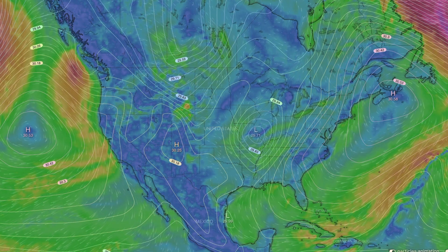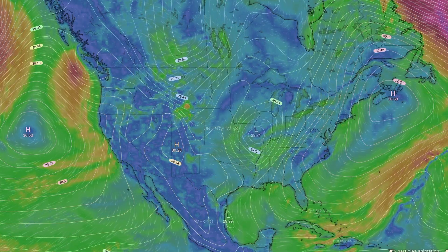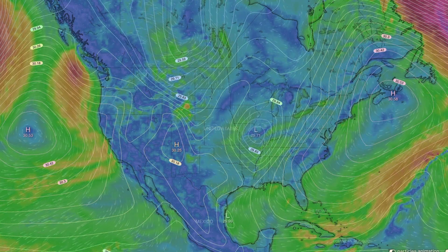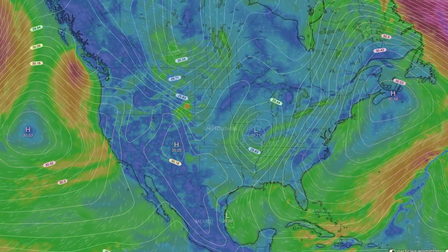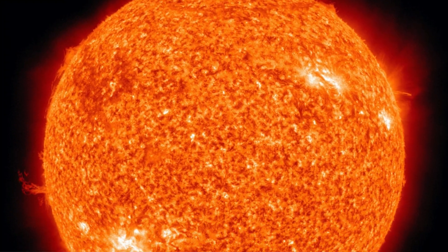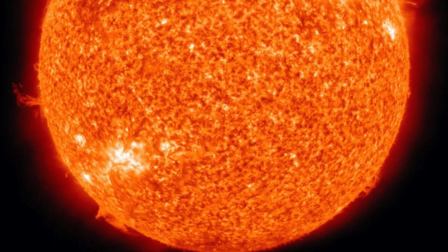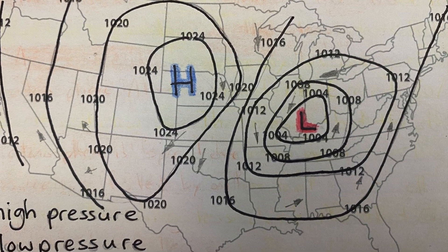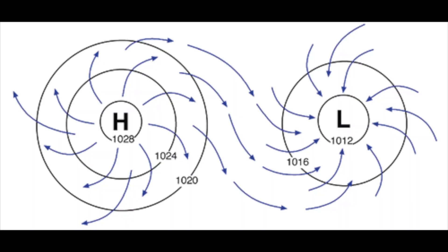Air is everywhere, so the potential for wind is universal. Energy to move air around is in good supply as well. The energy responsible for moving air comes from the sun. If there is high pressure in one area and low pressure in another, air will tend to move from the high-pressure place to the low-pressure place, because the air particles are always moving and will equalize pressure, reaching equilibrium when possible.